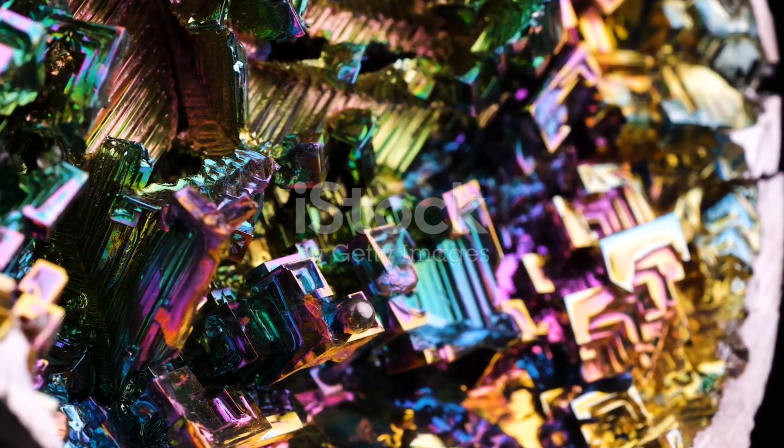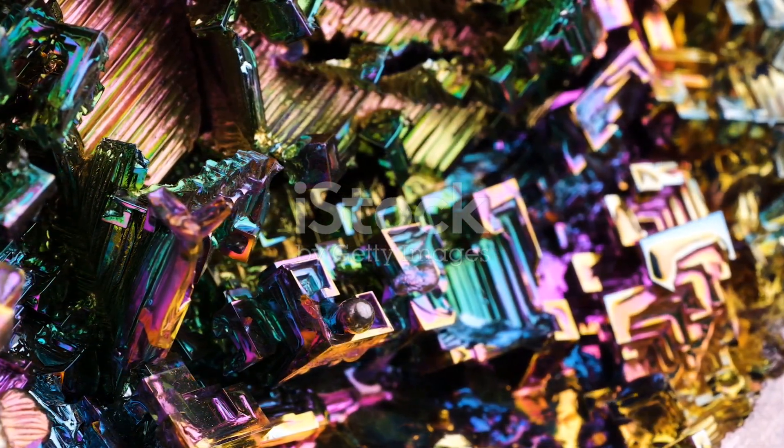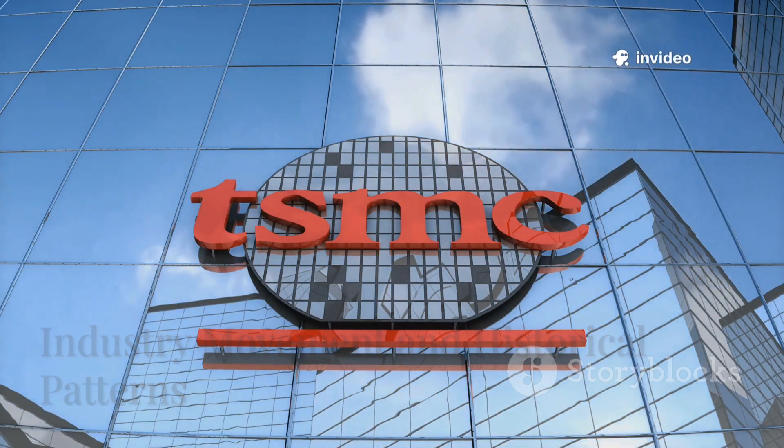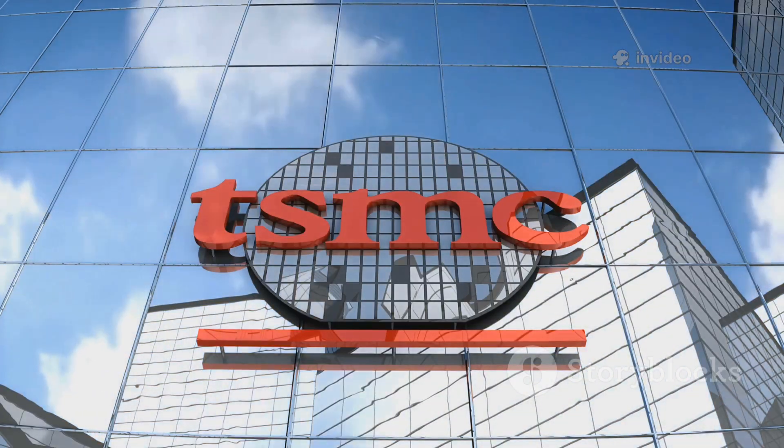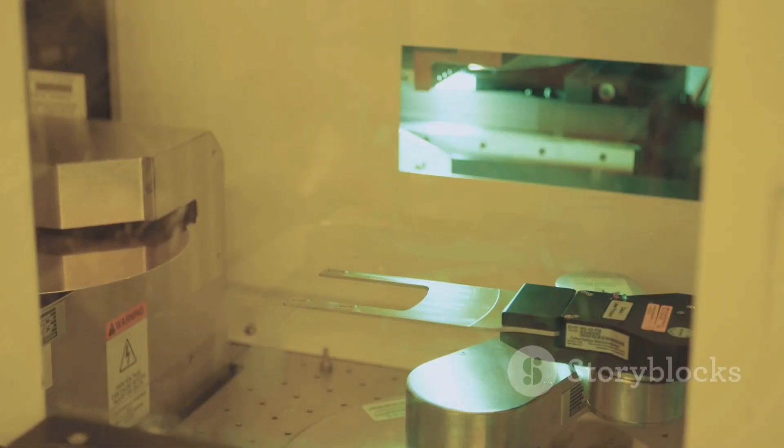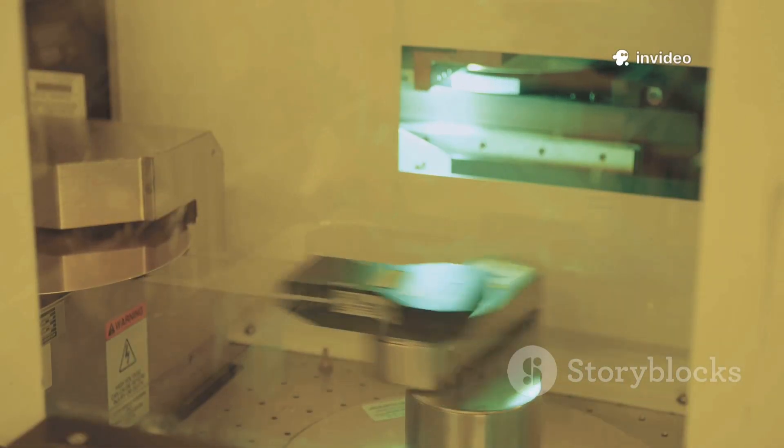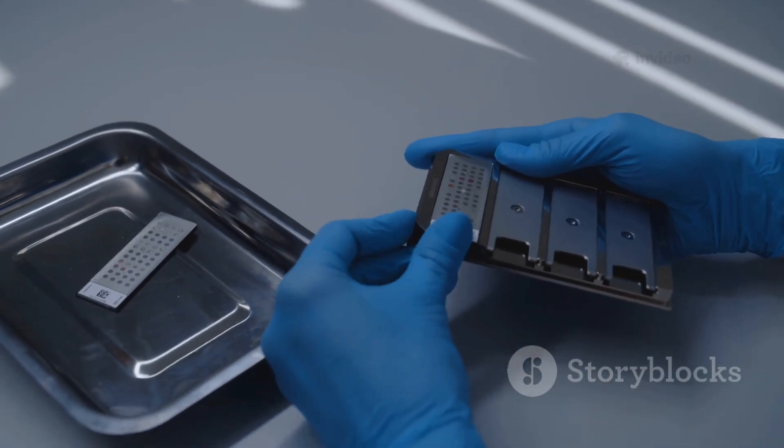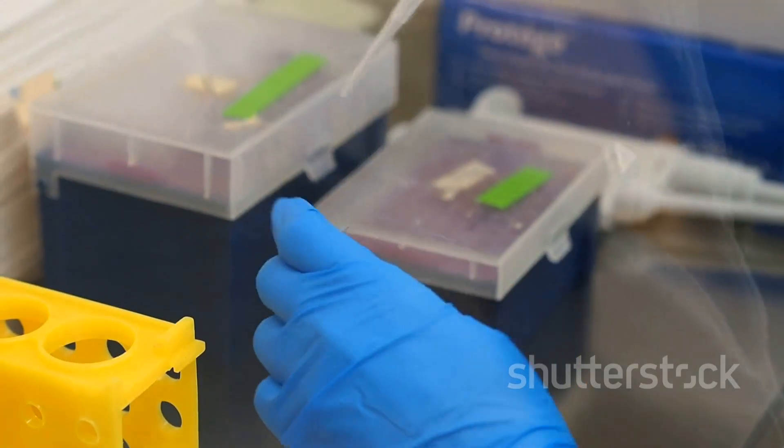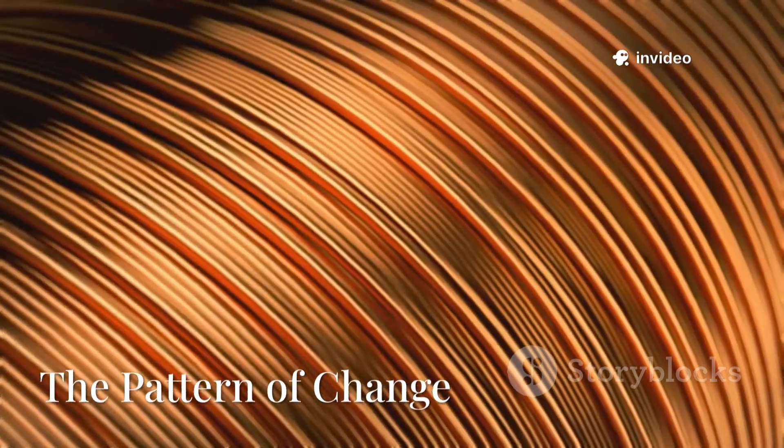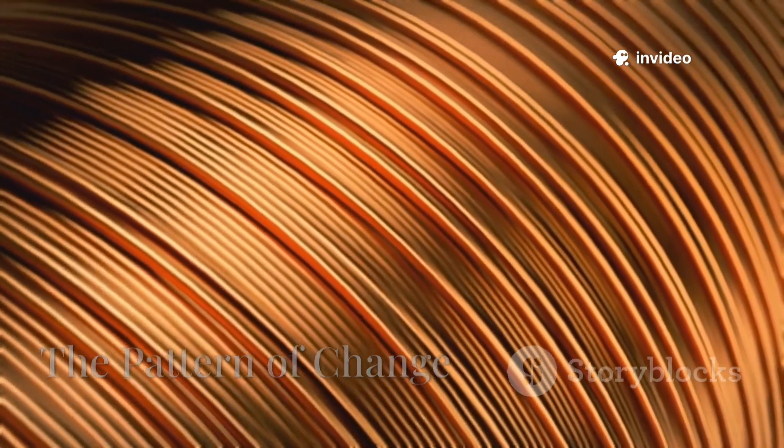In other words, if this type of chip really scales up, whoever controls bismuth is going to control the next leap in computing. It's no coincidence that giants like TSMC are already moving. In partnership with MIT and the National University of Taiwan, TSMC has also started testing bismuth as a contact material for new generation transistors. This shows that the movement has begun and there's no turning back. By the way, such turnarounds based on new materials have always been the pattern. It was like that with copper, with silicon, with germanium, and now with bismuth.